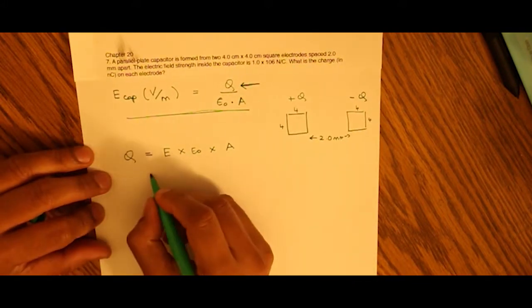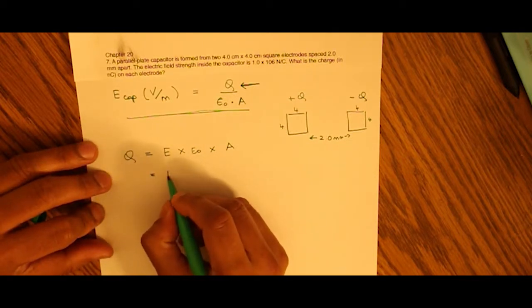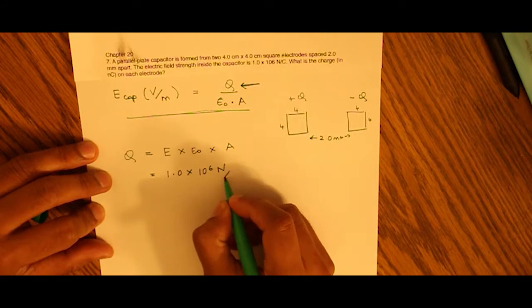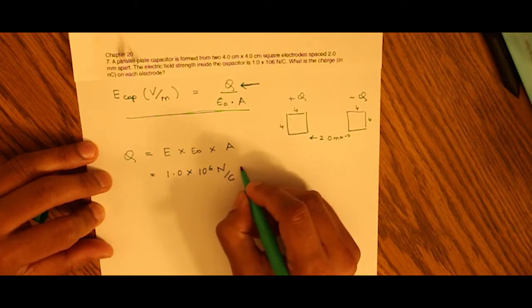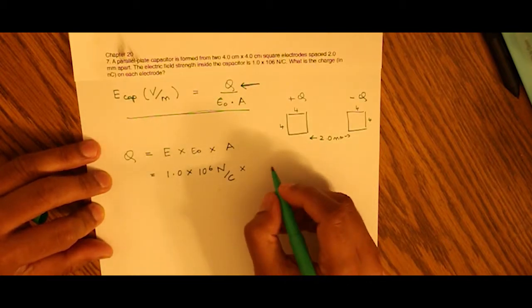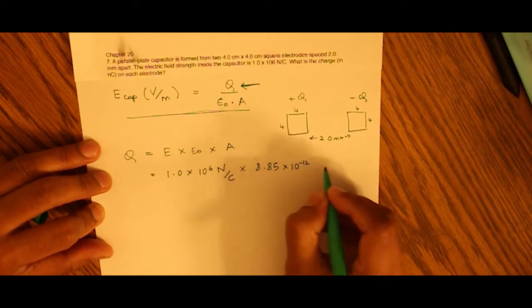We know the electric field given to us is 1.0 × 10^6 N/C. We know the permittivity of free space constant as 8.85 × 10^-12 C²/N·m².